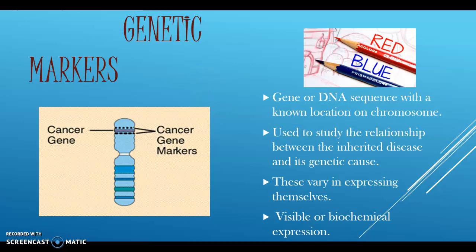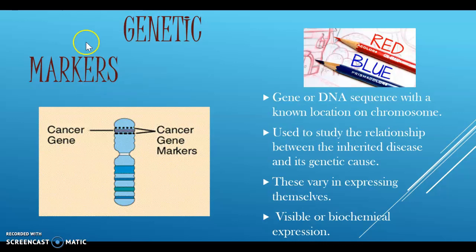A genetic marker is a DNA sequence with a known location on the chromosome, and it is used to identify the relationship between an inherited disease and its genetic cause. Genetic markers can help link an inherited disease with a responsible gene. DNA segments close to one another on a chromosome tend to be inherited together. Genetic markers are used to track the inheritance of a nearby gene that has not yet been identified but whose approximate location is known.